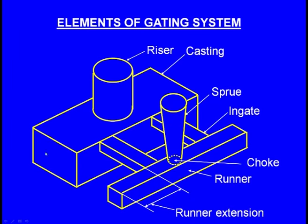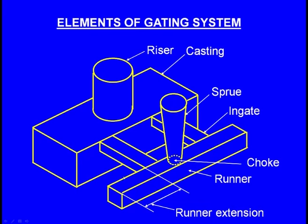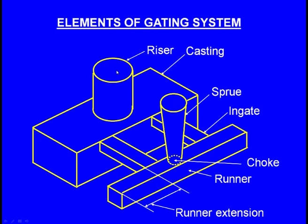Let us see this gating system. This rectangular block is the casting, and here we can see the sprue — a vertical passage. The diameter of the sprue at the top is more and at the bottom is less — it is tapered. The smallest diameter at the bottom is known as the choke. This is the runner, the horizontal passage. The molten metal enters, flows along the runner, then through the ingates. Here we have one ingate, another ingate, and this is the top riser.